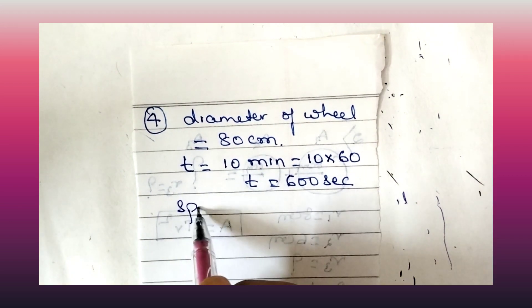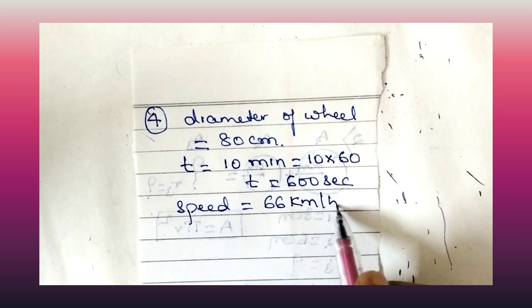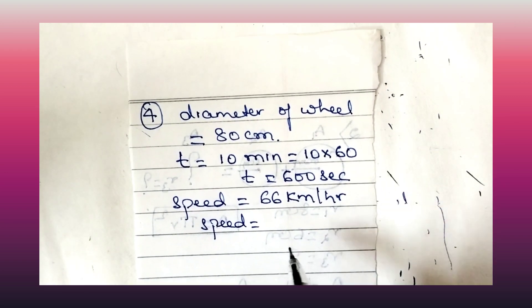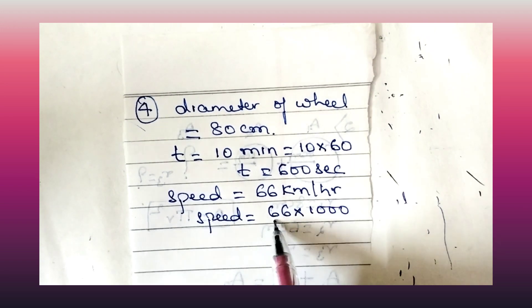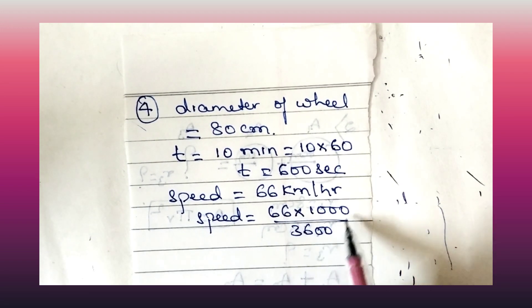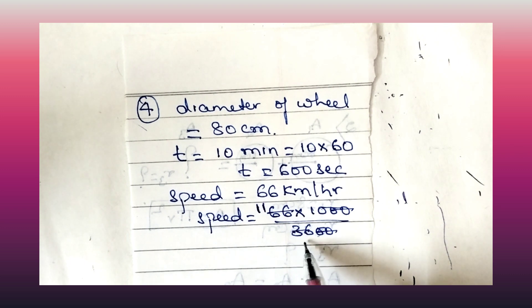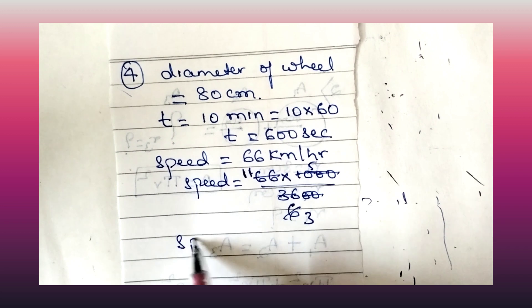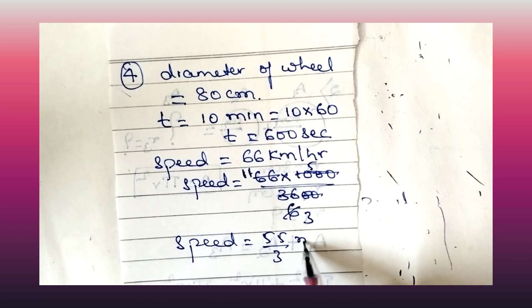The car is travelling at a speed of 66 km per hour. Converting to metres per second: 66 × 1000/3600 = 55/3 metres per second.